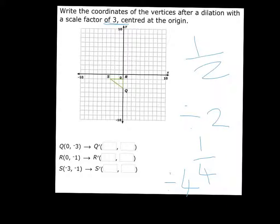So it's 3. So 0 times 3 is 0. 0 times negative 3 is negative 9. 3 times 0 is 0. And negative 1 times 3 is negative 3. Negative 3 times 3 is negative 9. Negative 1 times 3 is negative 3. So if the number over here is positive, the number at the end will be positive. If the number over here is negative, then the end number that you've divided or times will be negative.